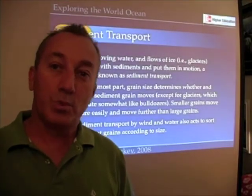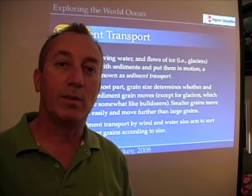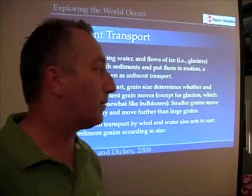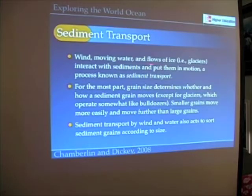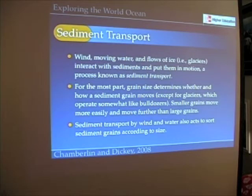Those are processes that break down rocks. What happens when those sediments are formed? How are they moved from one place to the next? Any process that moves sediments — and that could be wind, water, even flows of ice — so if you think about glaciers, because glaciers flow down the sides of a mountain, they interact with those sediments and put them in motion. A process known as sediment transport.